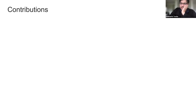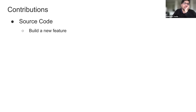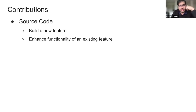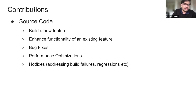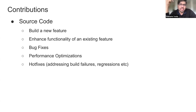Now let's talk about contributions. There are different kinds of contributions. The main one is source code, and within that there could be multiple kinds: building a new feature, enhancing functionality of an existing feature, bug fixes, performance optimizations, hot fixes — which are situational, like when a company is seeing a build failure or regression on a daily basis. These fall into bug fix or performance optimization territory, but worth calling out separately.